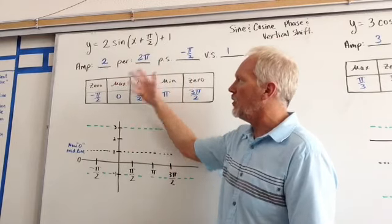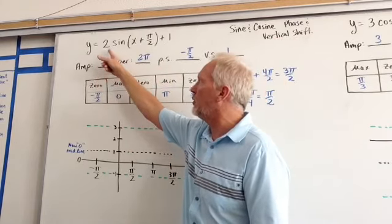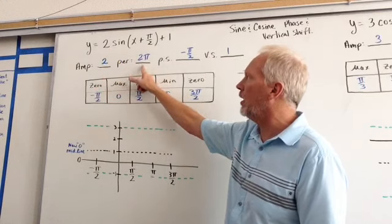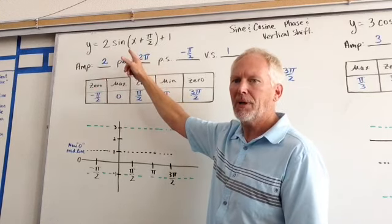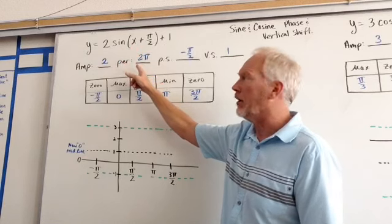Our basic strategy is to fill in our amplitude. Our amplitude is 2. Our period, normally 2 pi over b. Well, in this case, our b value is 1.